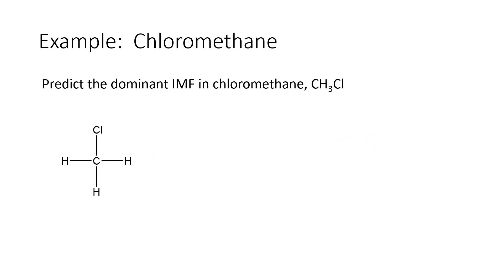Chloromethane is our next example — a methane that has had one hydrogen substituted with a chlorine atom. We check for hydrogen bonding first: does this molecule have a hydrogen attached to nitrogen, oxygen, or fluorine? No, all the hydrogens are attached to carbon, so there's no hydrogen bonding. Next, we check if this is a polar molecule. Looking at the central carbon, it has four single bonds, but three are to hydrogens and one is to chlorine. This lack of symmetry means it is a polar molecule, so the dominant intermolecular force is dipole-dipole.